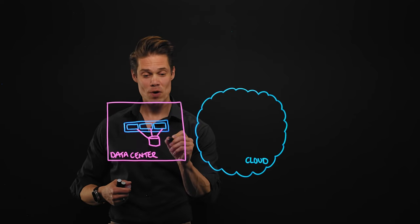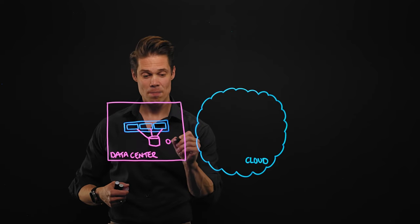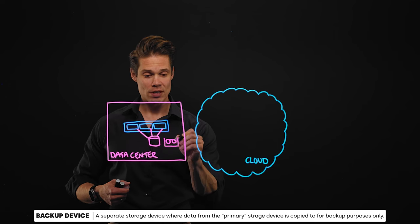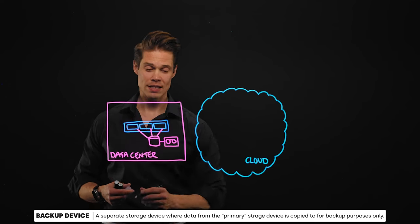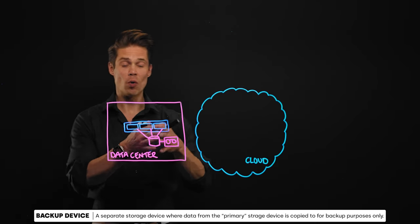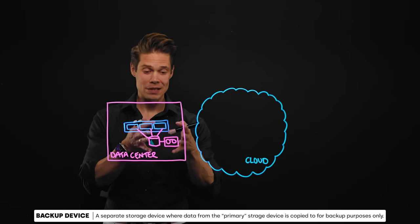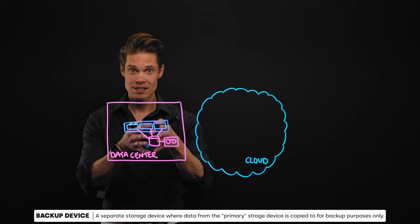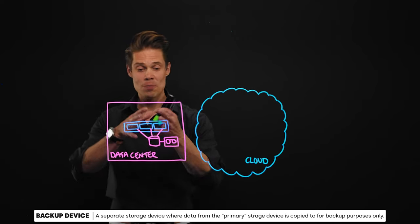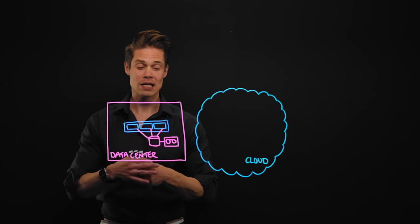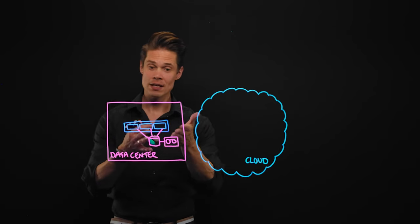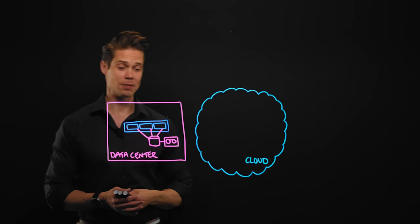Another thing we want to have is some kind of a backup device. They can be tape libraries or normal servers with a lot of storage capacity, to make sure we always have a duplicate of the data in this primary storage. So if something happens to the production environment, we still have the data as a backup.